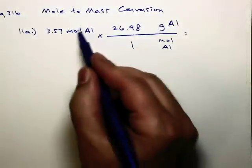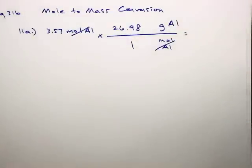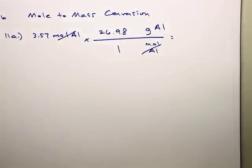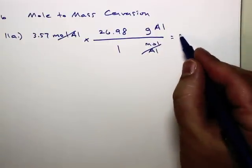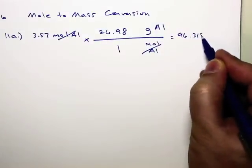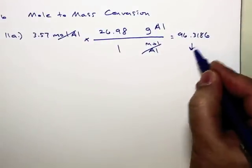Now, we can get rid of like units again. Cross cancel them. Now, look how much easier this problem is. We got a simple multiplication problem. 3.57 times 26.98. And we get an answer. Now, my screen is reading 96.3186. Should I leave that like that? Or no?